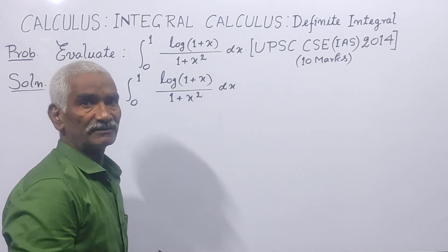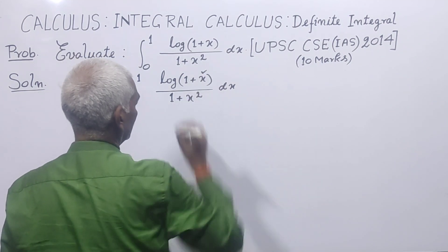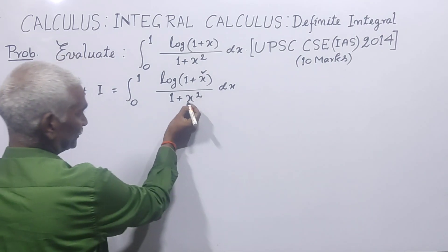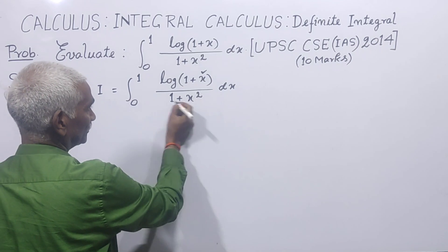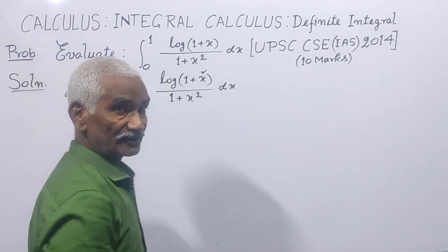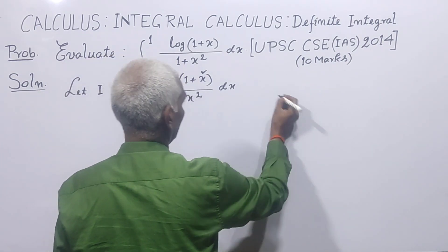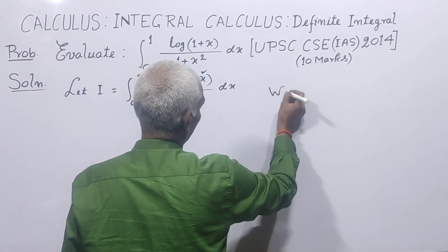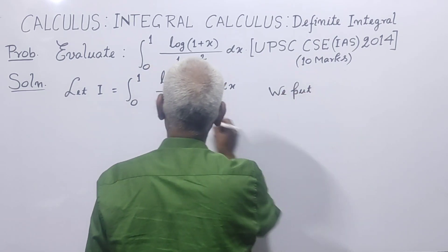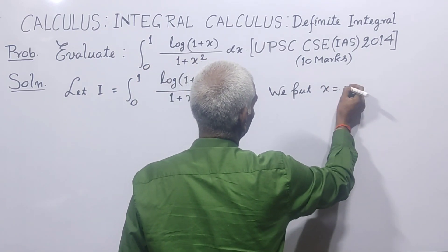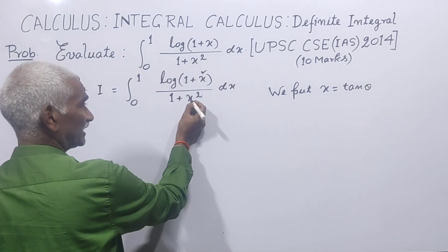First of all, we will discuss substitution. Here we see x. We will use a trigonometric substitution. If we put x equal to tan θ, then the denominator 1 + x² becomes 1 + tan²θ, which equals sec²θ. So we apply this substitution: let x = tan θ.